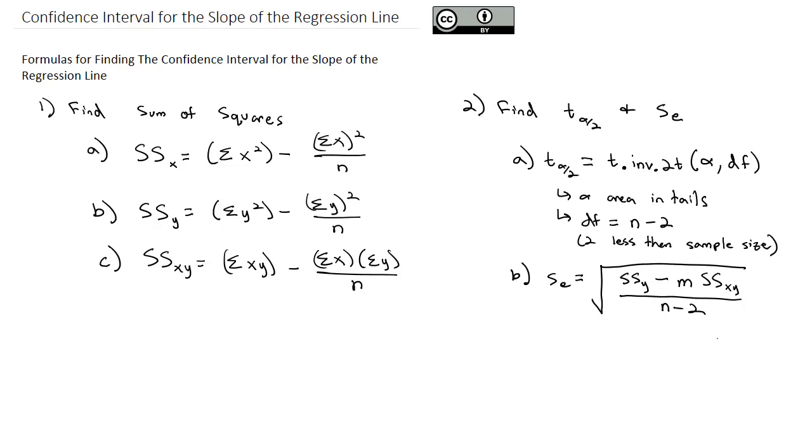Once we have those two pieces, that's when we can find the error, or how wide we cast the net around the point estimate, and the confidence interval, where the net's going to cover. The error equals that critical value, t sub alpha over two, times the standard error, divided by the square root of the sum of squares in the x direction.